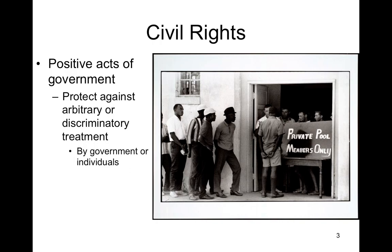We're all familiar with the concept of civil rights, particularly here in the United States and in the South in particular. Civil rights, in order to be realized by individuals, requires a positive act on the part of government. It's protection against some form of arbitrary or discriminatory treatment, either by the government or by other individuals, and it is up to the government to ensure that these rights are realized. Voting rights, for example.